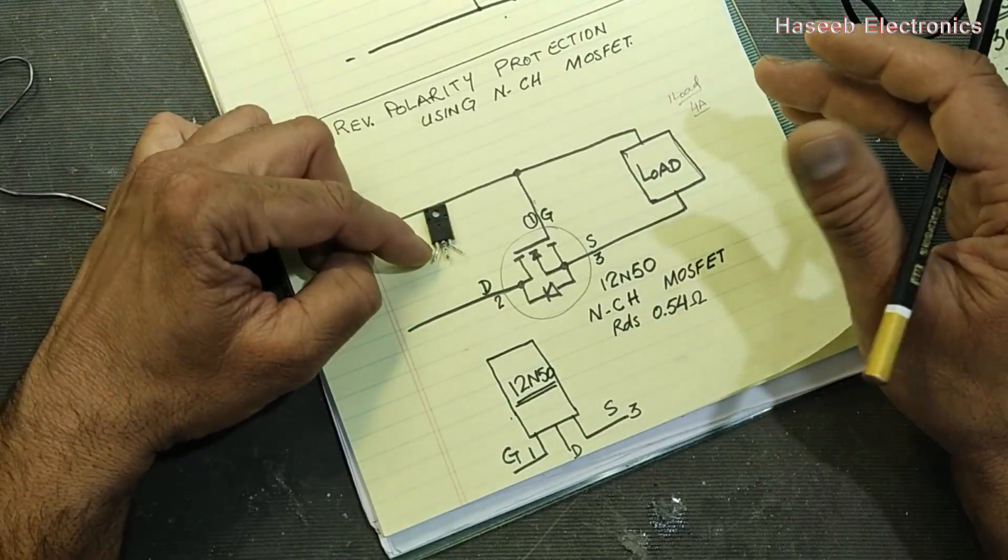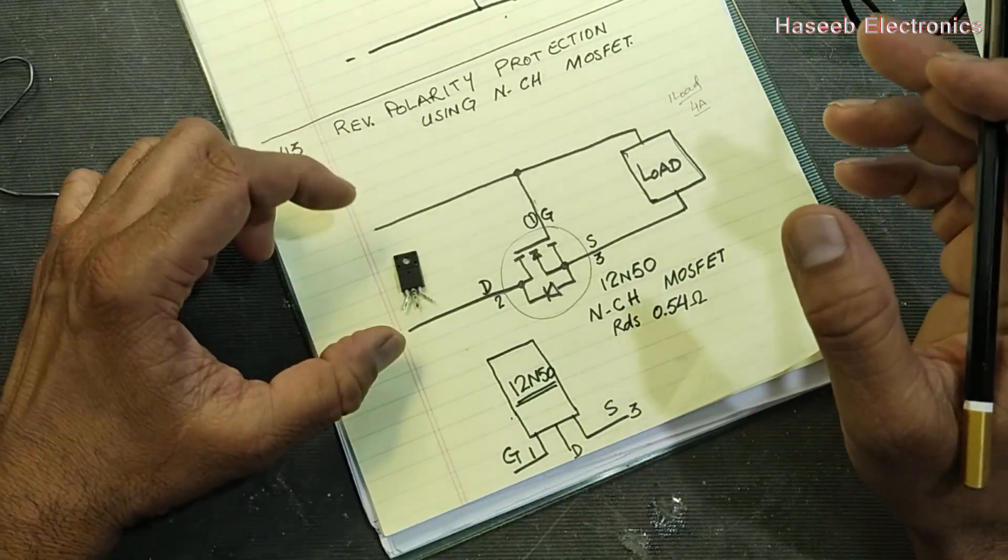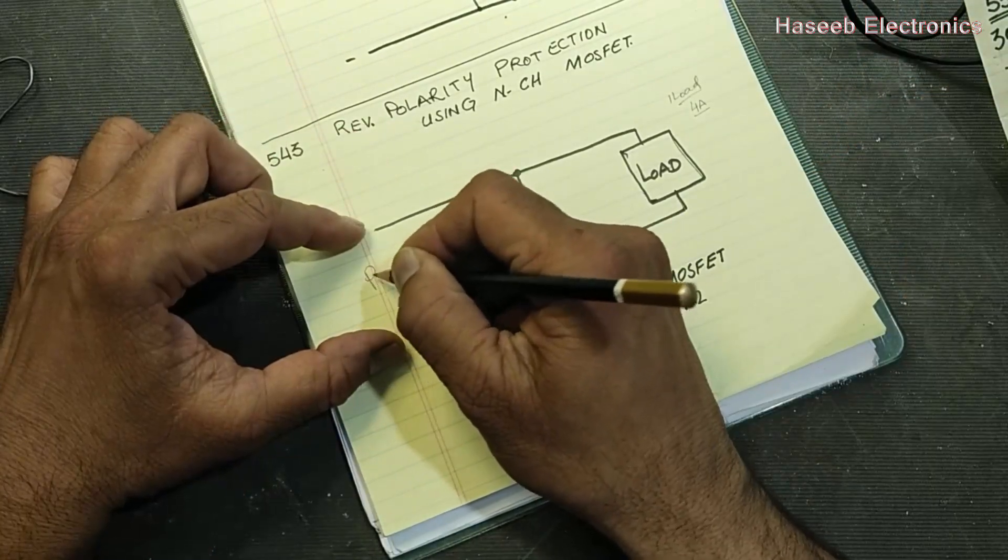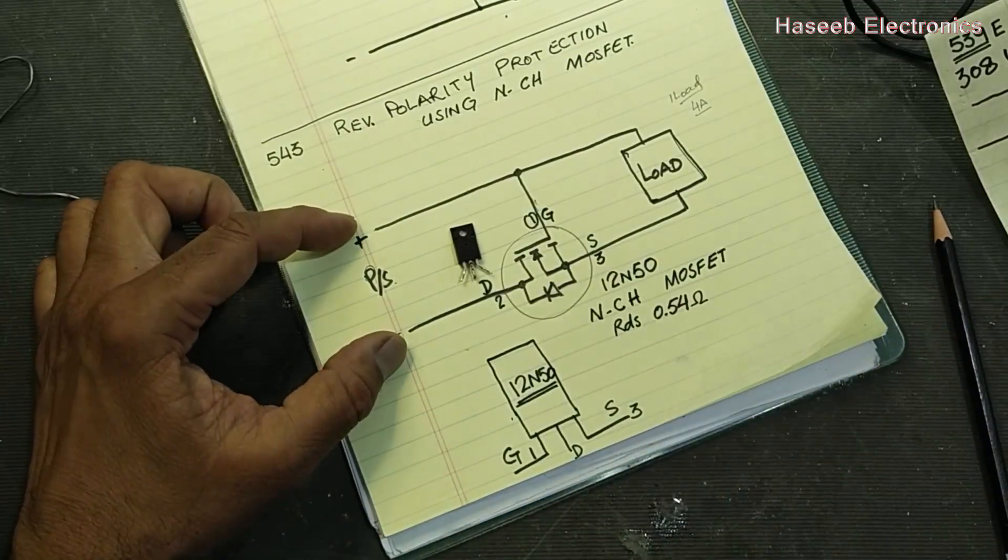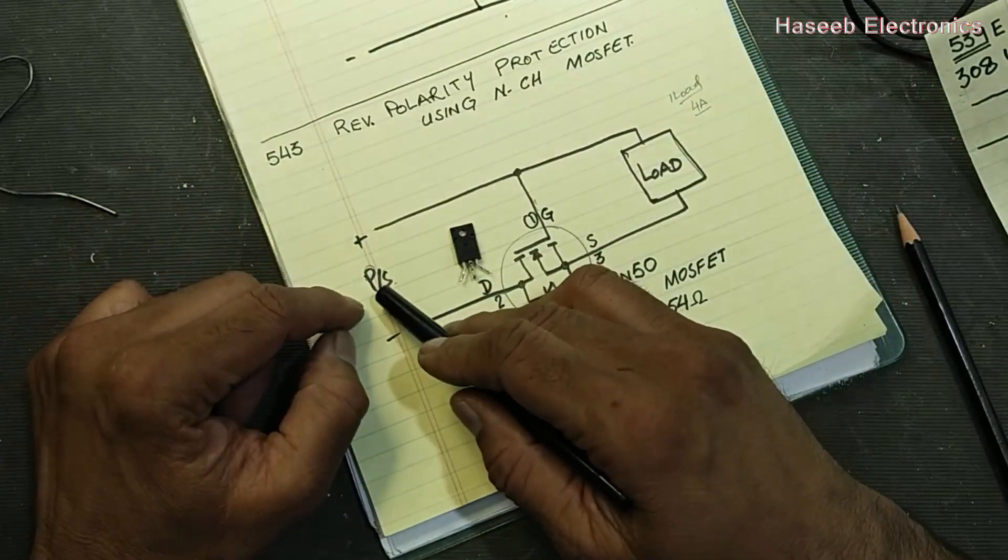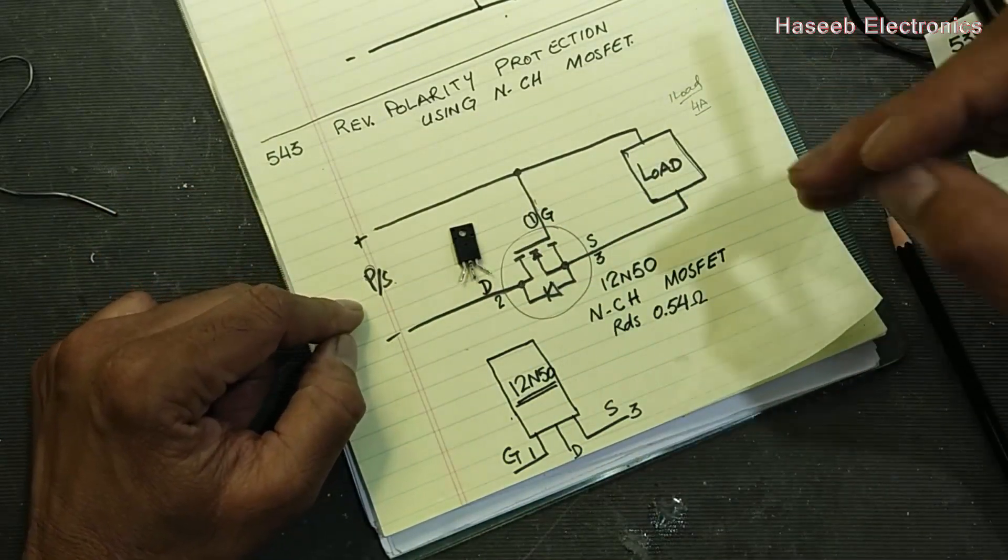The second parameter while selecting a MOSFET: this is our power supply, how much positive and negative voltage are there. Multiply by 2 or 3 with these voltages and select in that range or upper range.